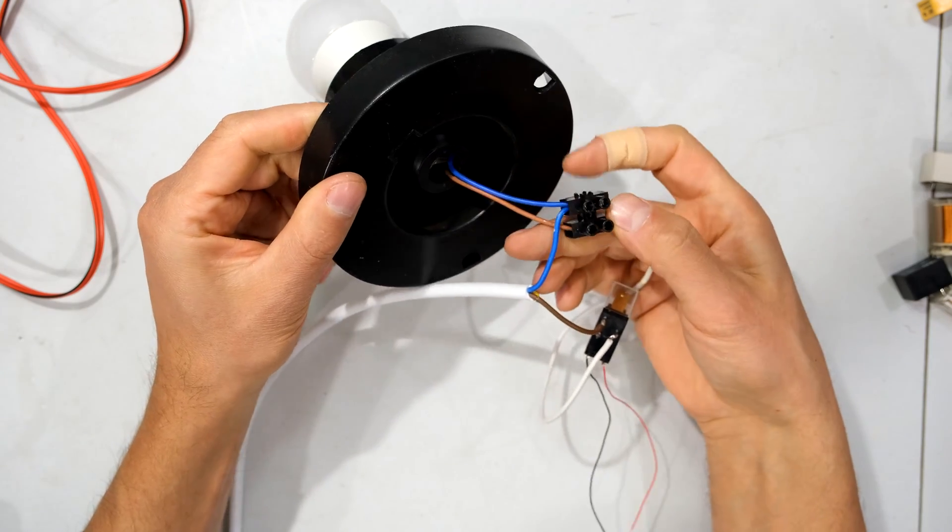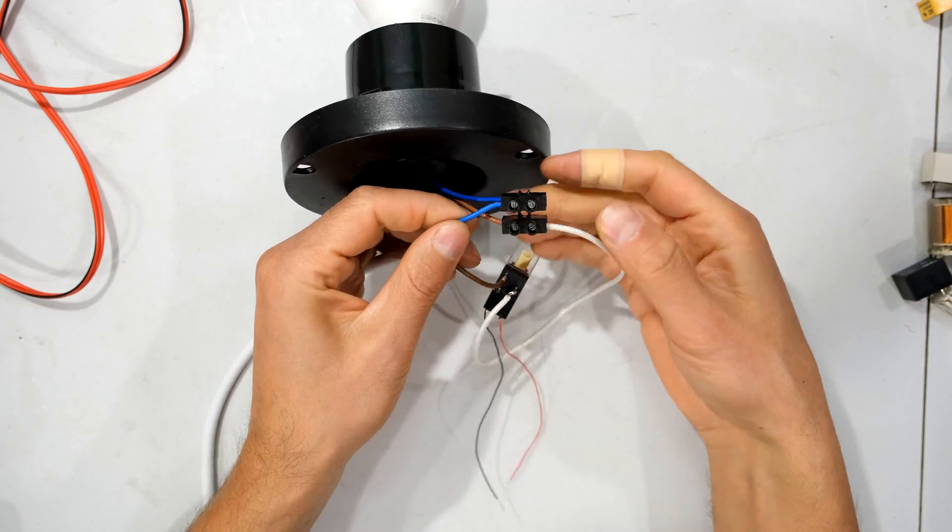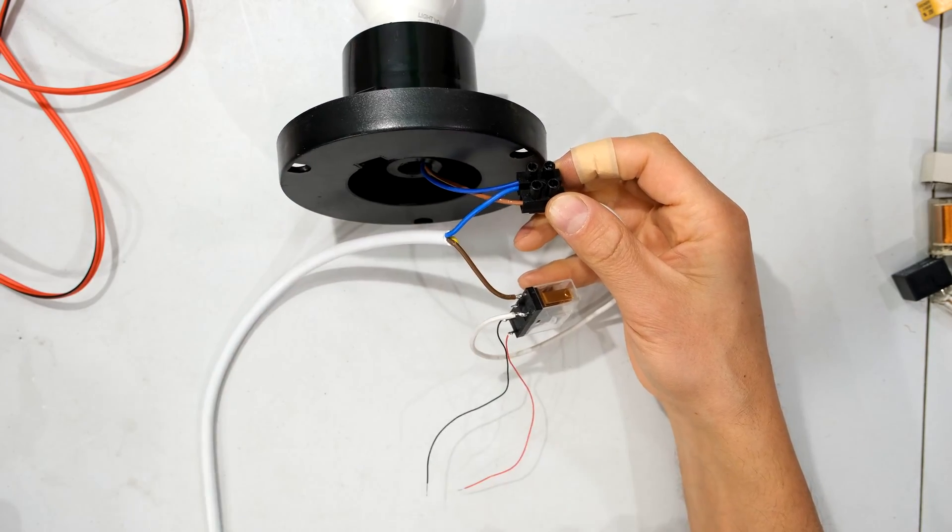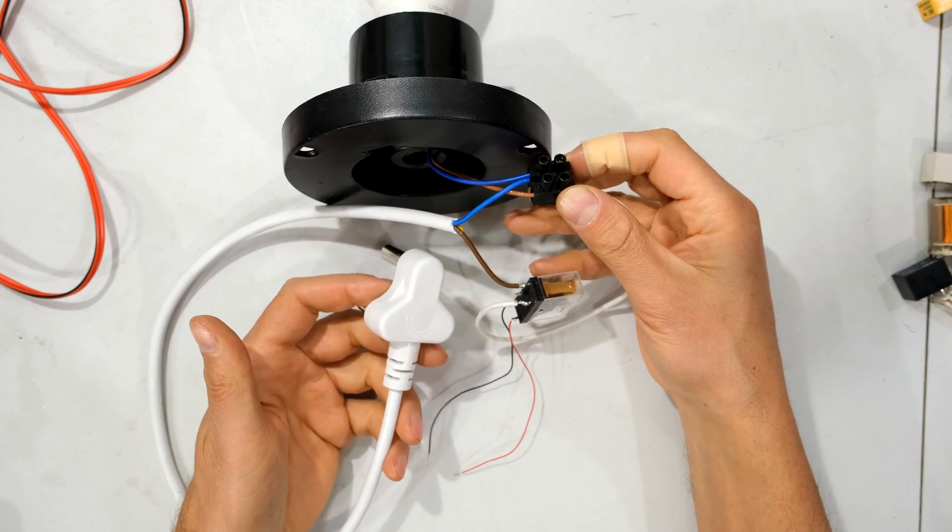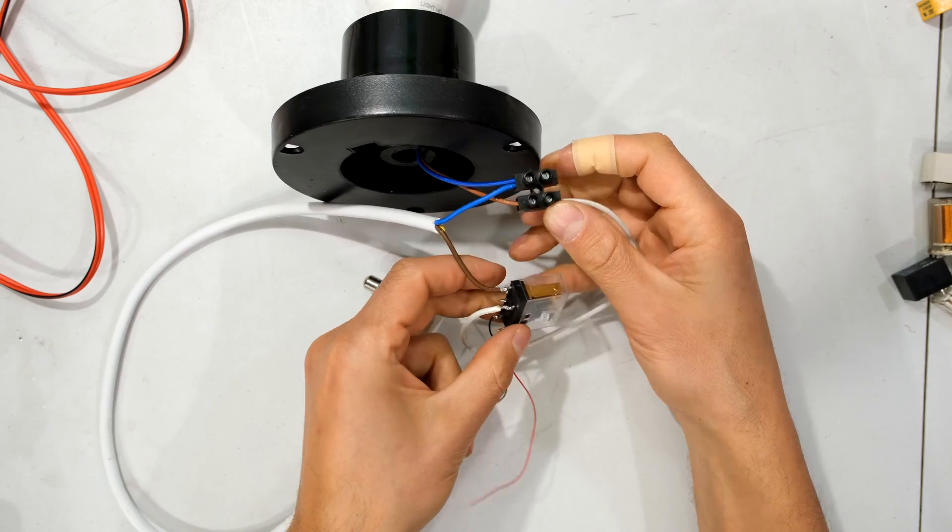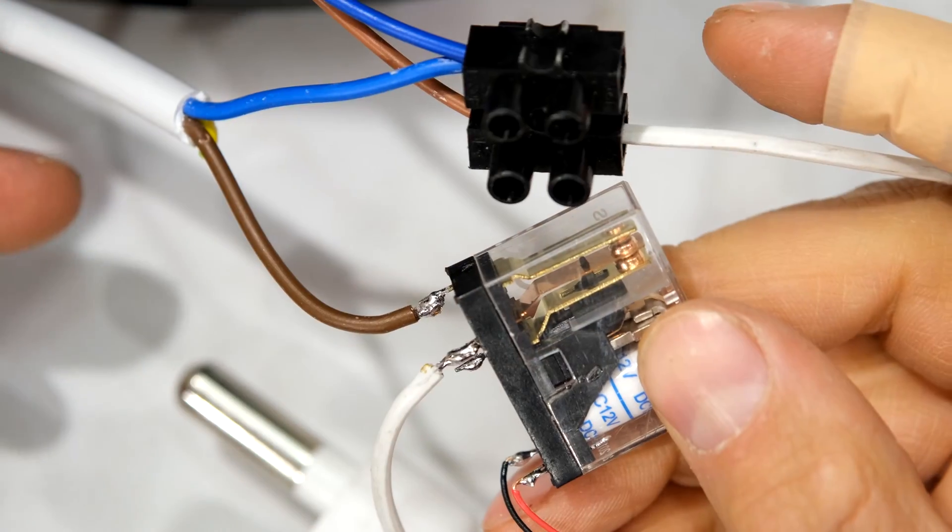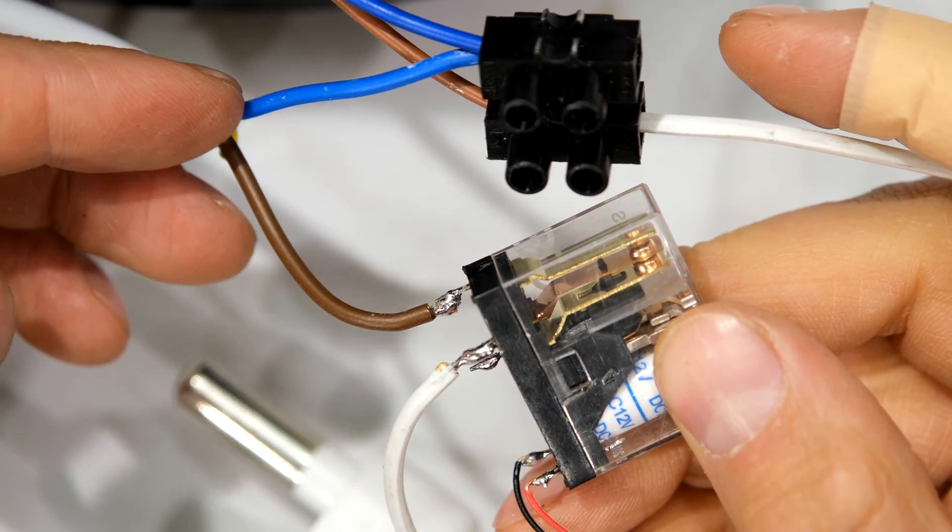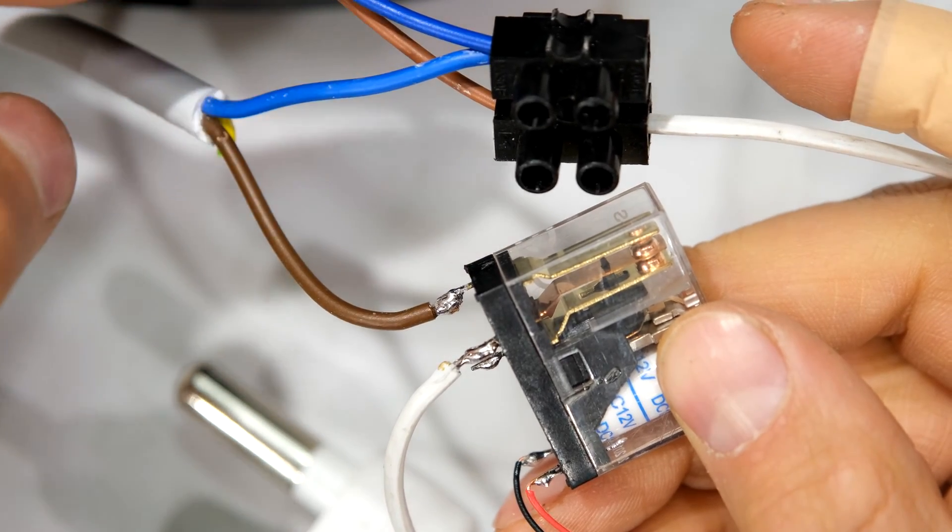The live and the neutral are connected here to this terminal block. The neutral is connected directly to the supply. Here's my little supply cable which I'll plug in shortly. The live from the supply is going via a relay.